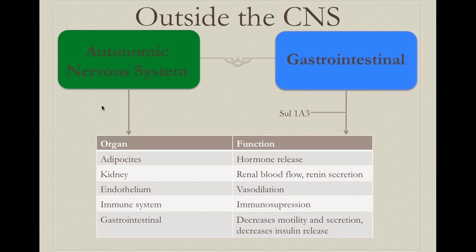When we activate the adrenal medulla — the same area that produces adrenaline as a hormone — it synthesizes and releases dopamine into the blood, acting as a hormone on all of these peripheral tissues. Especially important is the decrease in insulin release. Some dopaminergic diseases and dopaminergic drugs can modify this insulin release and cause diabetes. For example, patients receiving antipsychotic treatment can develop insulin resistance, diabetes, and significant weight gain as adverse reactions.